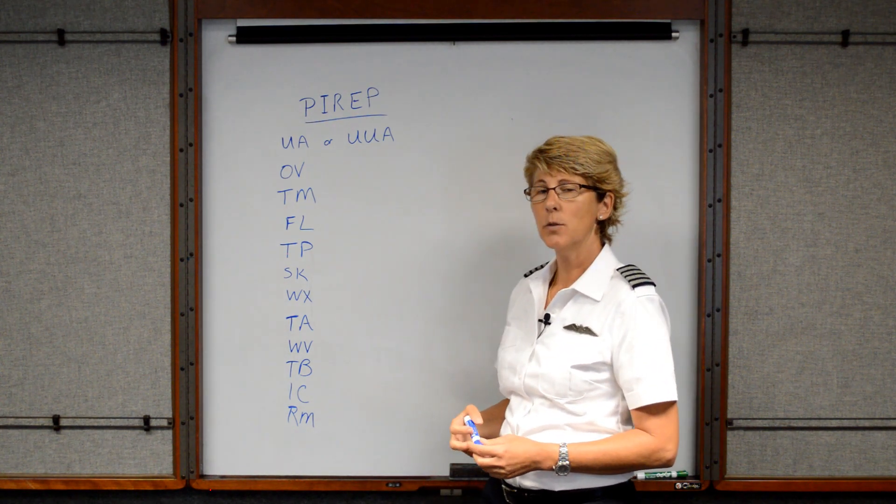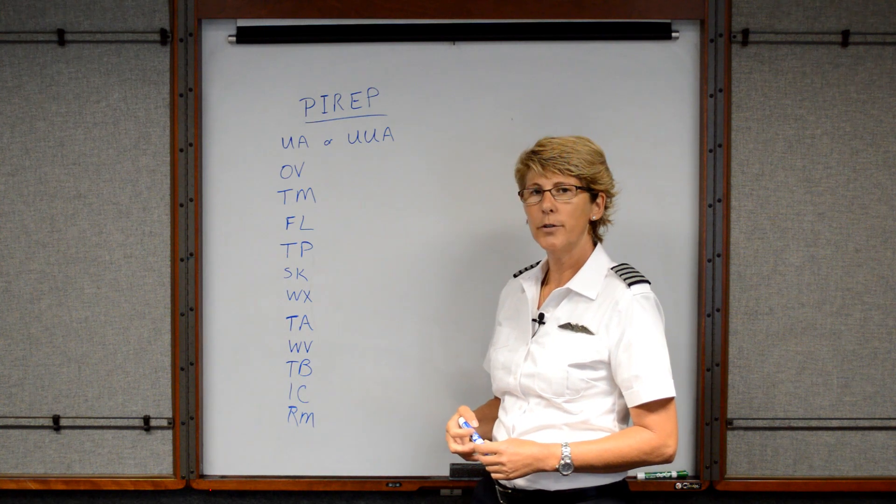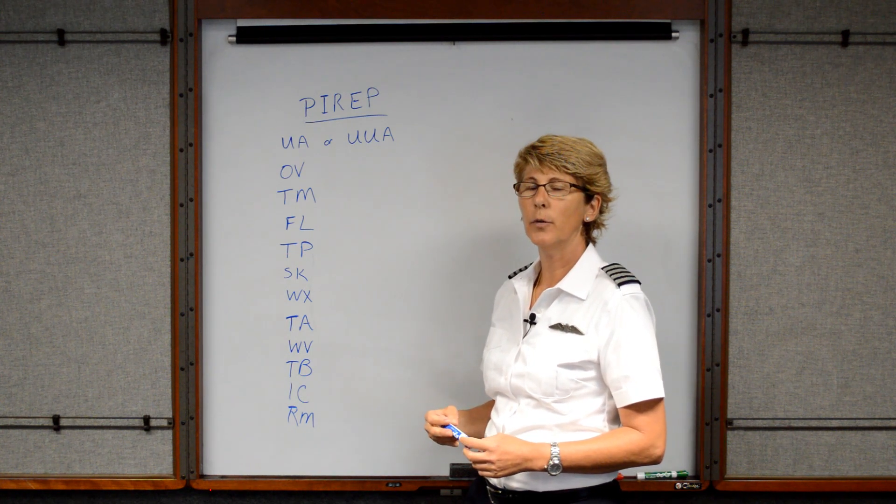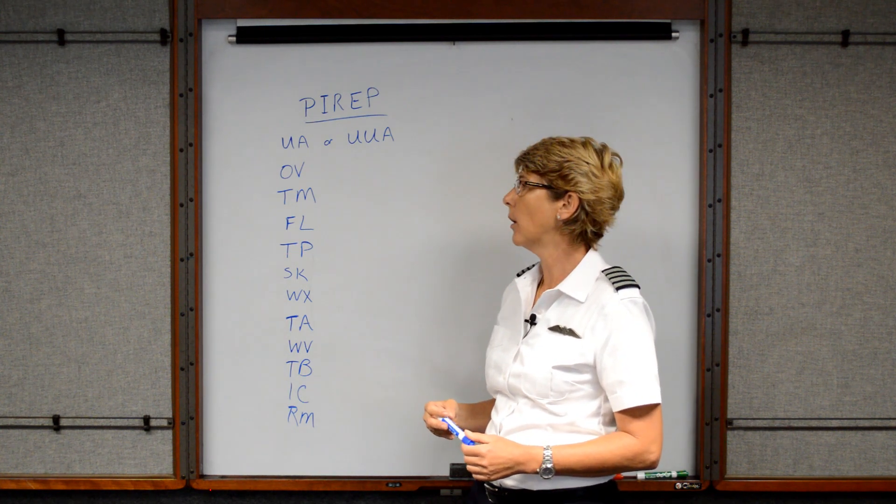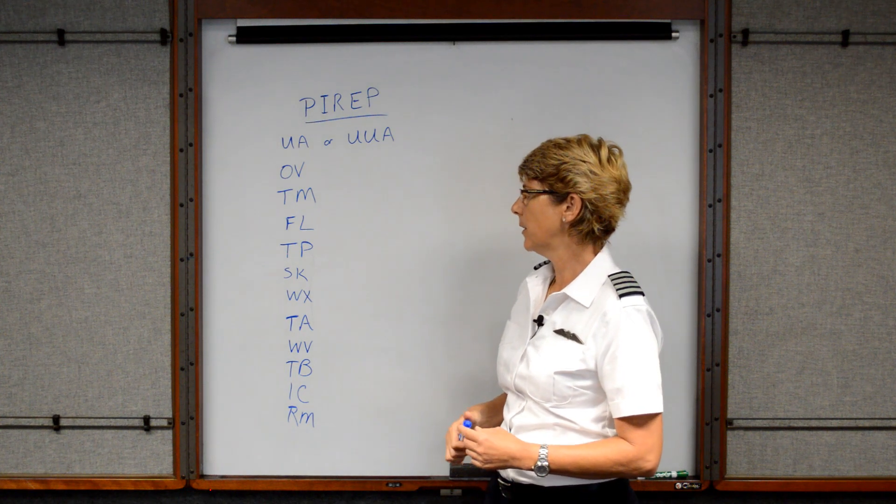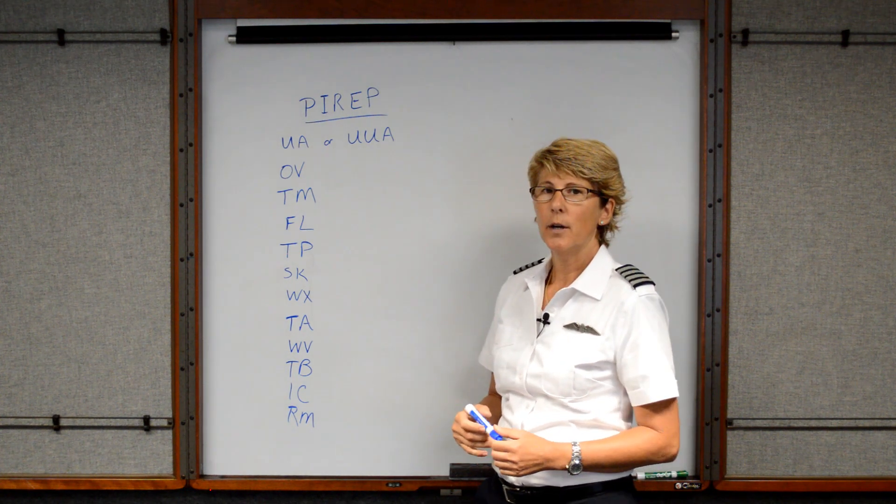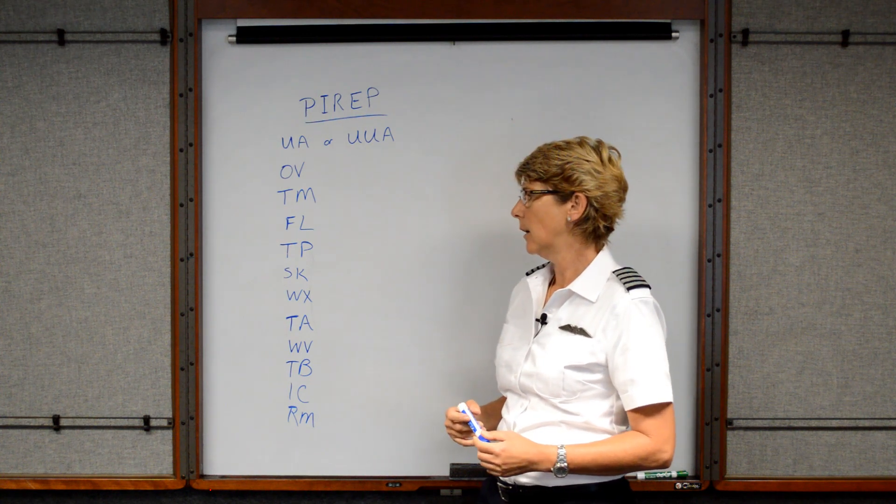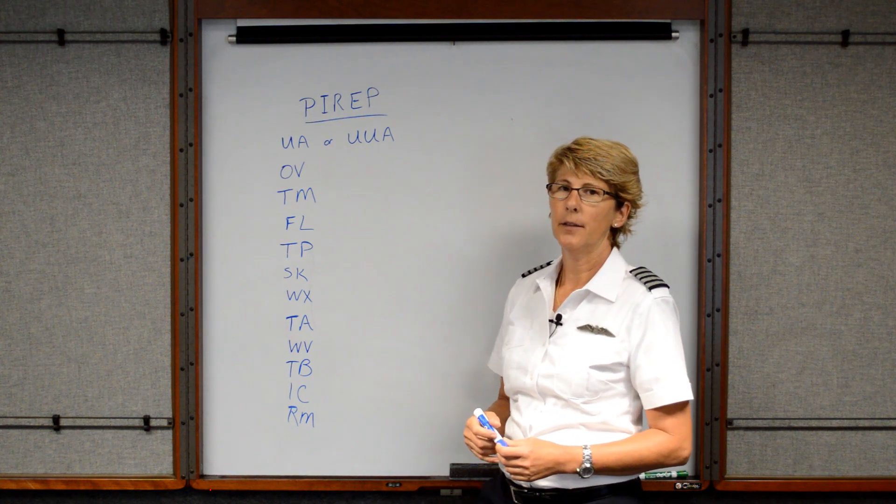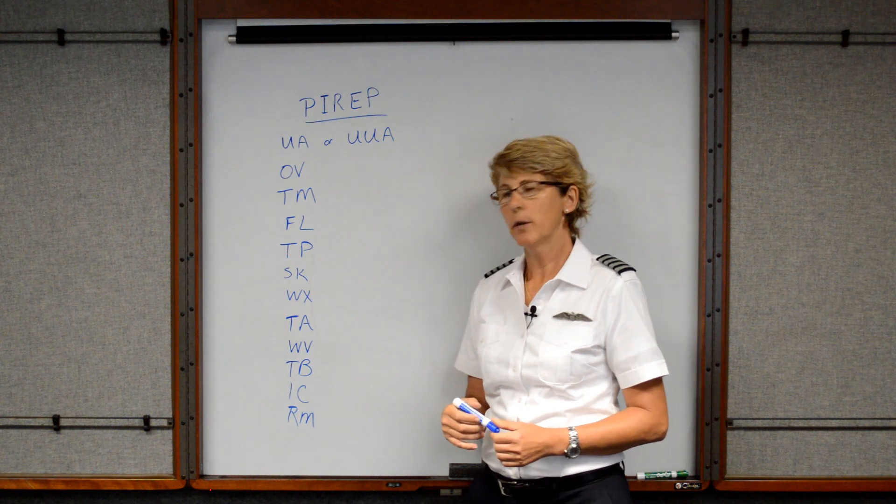We are approximately 20 miles off the 120 radial off of the Greenwood VOR, 5,500, and we're a Cessna 172. We'd like to report negative turbulence, unrestricted visibility, and the temperature 11 degrees Celsius.